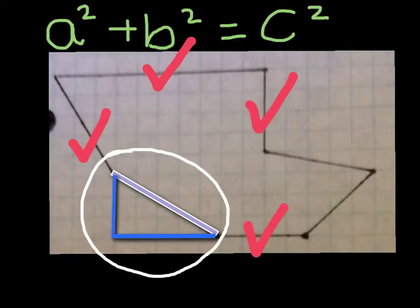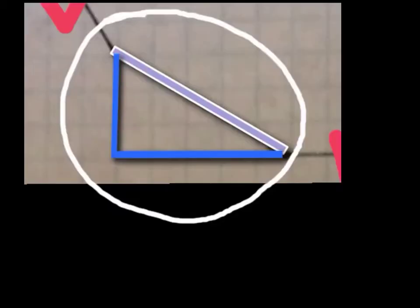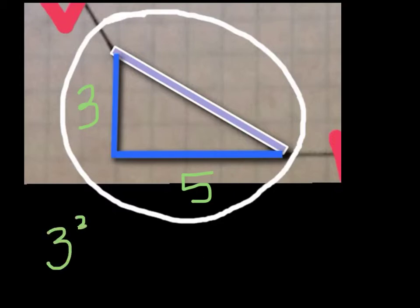Now we are going to find the length of the purple line by using this triangle. We know that one side is 3 units and the bottom side is 5 units. The side of 3 units is a, so a squared, which is 3 squared, plus 5 squared, which is b squared, equals c squared.